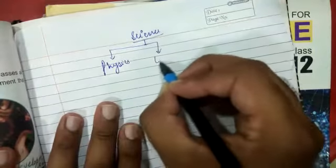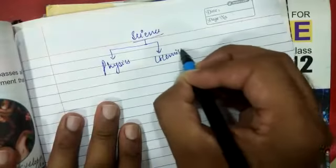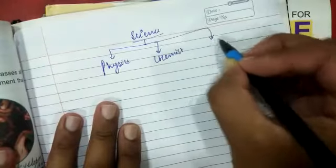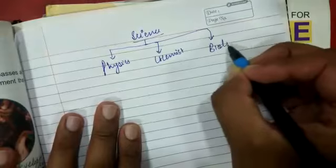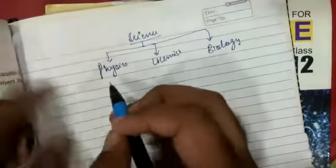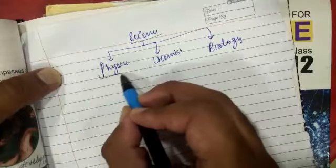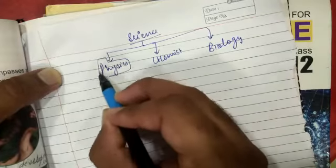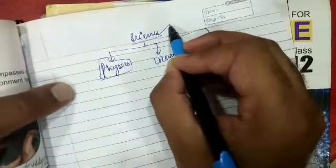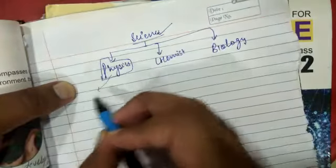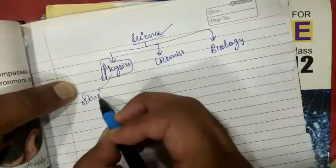The second one will be chemistry and third one will be biology. Now what happened if I'll explain you a bit. Physics is that part of science in which we will study about light.